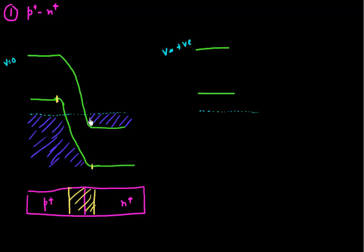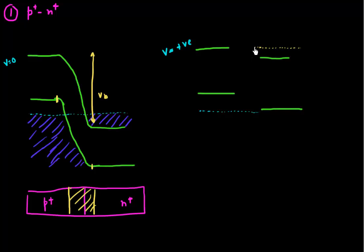By forward biasing, I've reduced the barrier between the P and N regions — this barrier has now become very small. I have my N region situated over here, and this is the quasi-Fermi level coming from the N region, which extends all the way into the depletion region. Similarly, the quasi-Fermi level for holes approaches that of electrons as I go into my N-type region.